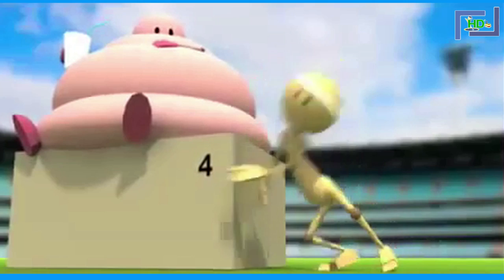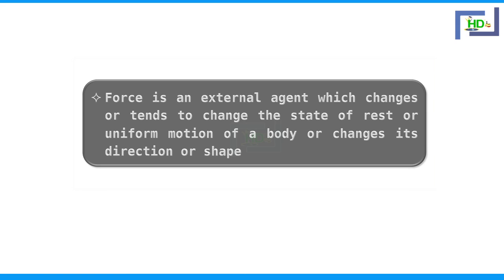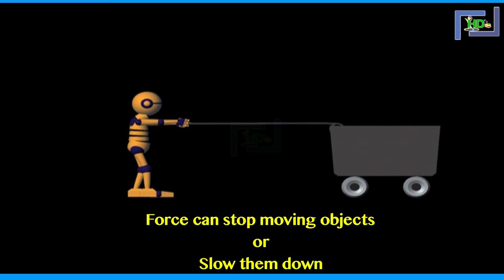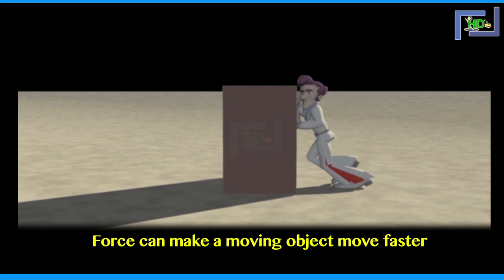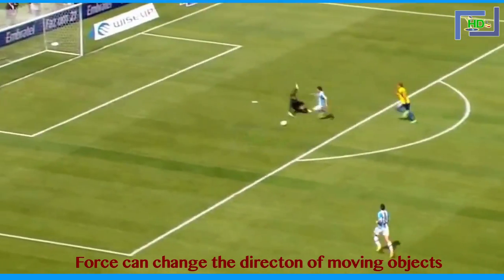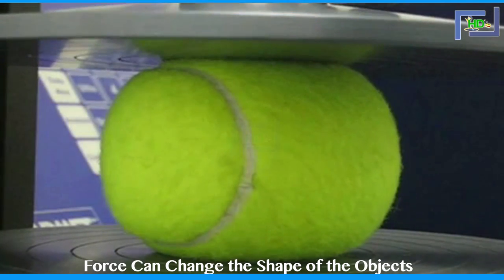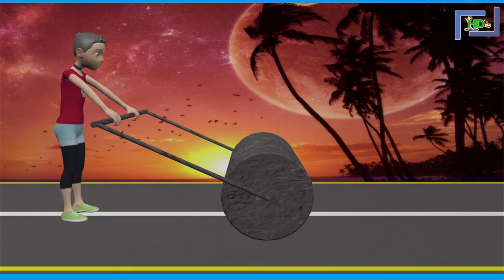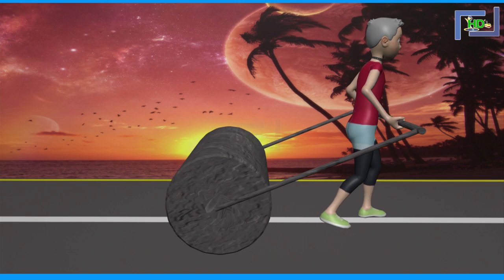Now let us define what force is. Force is an external agent which changes or tends to change the state of rest or uniform motion of a body, or changes its direction or shape. That means: a force can cause motion in a stationary object; a force can stop moving objects or slow them down; a force can make a moving object move faster; force can change the direction of moving objects; and force can change the shape of objects.